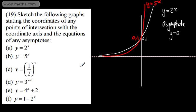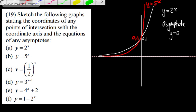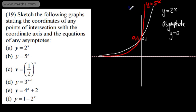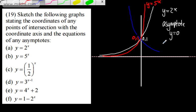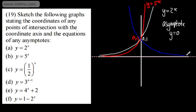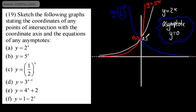Now let's draw y = (1/2)^x. This is essentially y = 2^x reflected in the y-axis. It comes down and tends to 0. We can write it as 1/(2^x), which is the general notation we would use. The asymptote for all of these is y = 0, and all of them go through the point (0, 1).